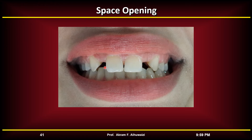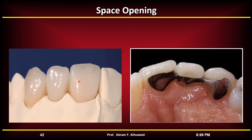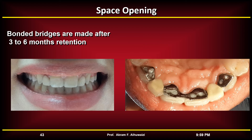When opening spaces, a fixed appliance is always required to retract the canines backward. After that, a cemented or bonded tooth can be placed to replace the missing lateral incisor. Whenever space is opened for bridge work, it is important to retain with a partial denture for at least three to six months, particularly if an adhesive acid-etched bridge is to be used, as placing bridges immediately after space opening leads to greater failure due to tooth mobility.